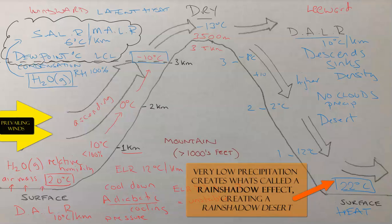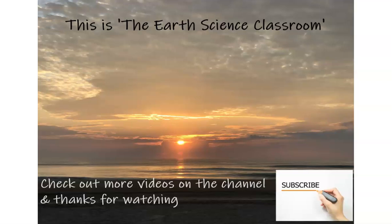On the leeward side, the descending air also experiences adiabatic heating — as altitude decreases toward the surface with gravity, air pressure increases, causing the volume of the air parcel to decrease and its temperature to rise. This is the Earth Science Classroom. Thank you for watching — I hope you enjoyed the content. Check out more videos on our channel and don't forget to subscribe.